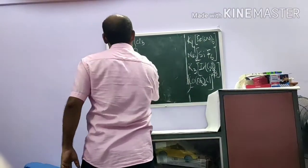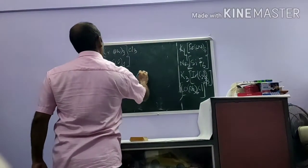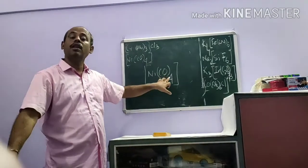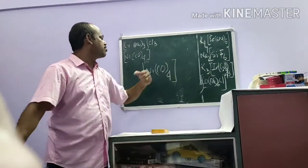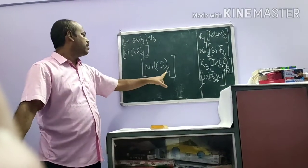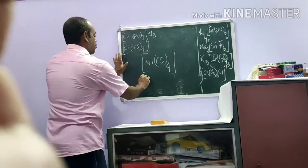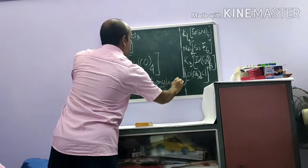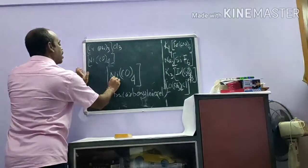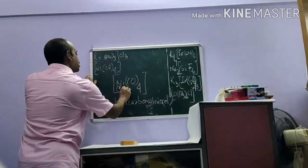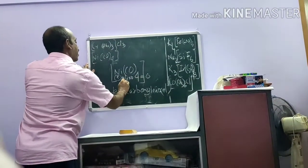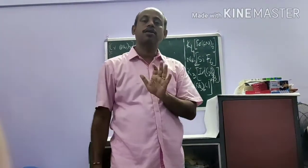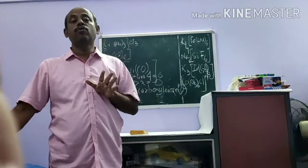Next example: [Ni(CO)4]. The metal is nickel and the ligand is carbonyl. There are 4 carbonyl ligands, so it is tetracarbonyl nickel. This is a neutral complex. Calculating oxidation number: let it be x. Carbonyl is a neutral ligand, so x + 4×0 = 0, giving x = 0. So the oxidation number is 0, written as Ni(0). This shows that in some coordination complexes the oxidation number can be zero.